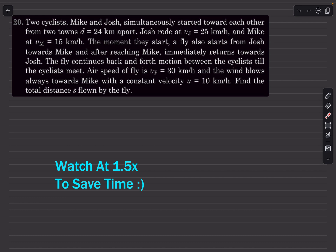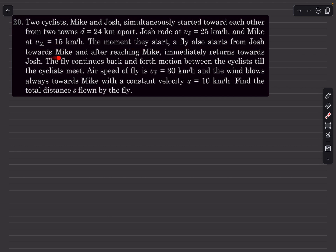Welcome back. In today's video we'll take up some problems from the 'Check Your Understanding' section of kinematics. This is question 20. We have two cyclists, Mike and Josh, who simultaneously start moving towards each other from two towns that are distance d apart. Josh rides at 25 kmph and Mike rides at 15 kmph. The moment they start, a fly also starts from Josh towards Mike.